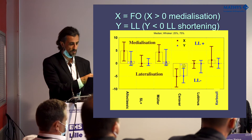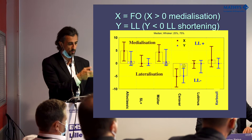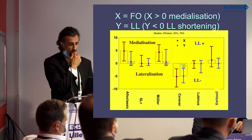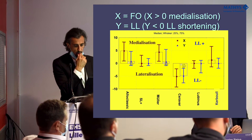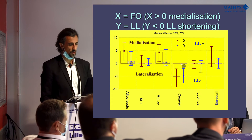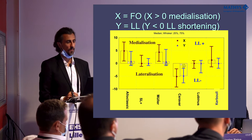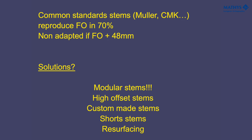For the Alloclassic, S-ROM, and Müller we have medialization; for the Lubinus and Ceraver we have shortening. For the most common standard stems used — like the Müller and the Charnley — we can reproduce the femoral offset in 70% of cases, but these standard stems are not adapted when the femoral offset exceeds 48 millimeters.